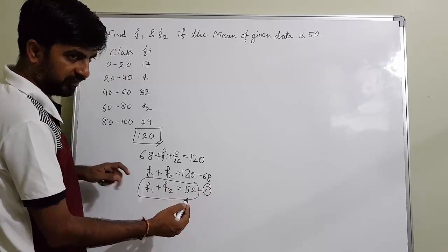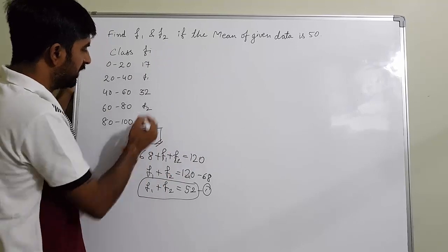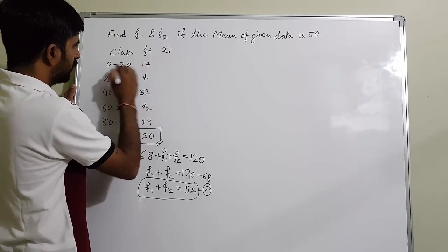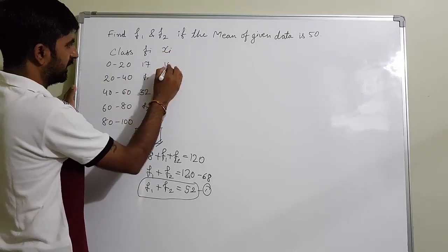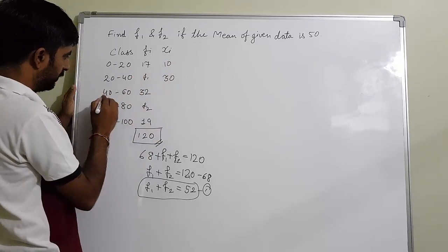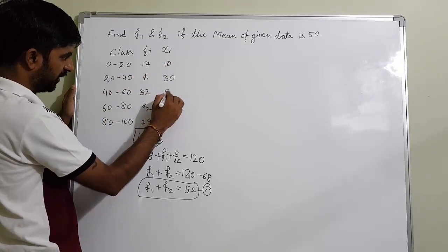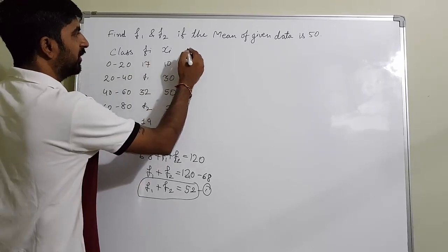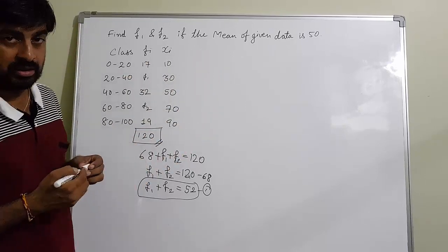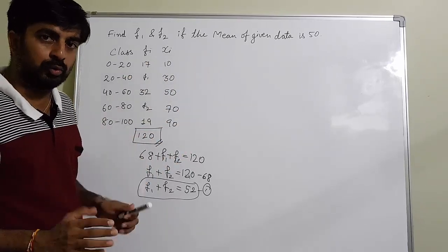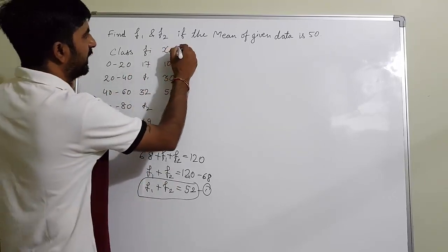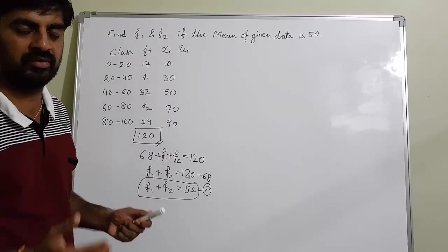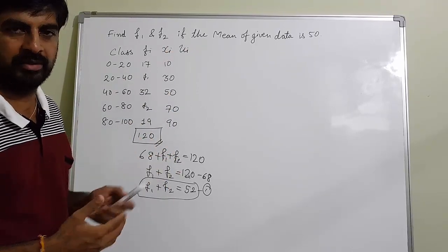Now we know the mean, so we could solve by the direct method by finding fi·xi. But we are going to use the easiest method — the step deviation method. If you don't know step deviation, please watch my previous videos on that topic.